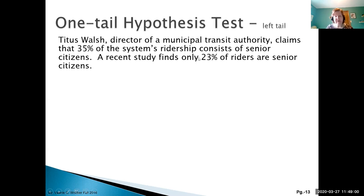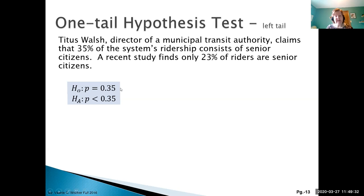Our random variable involves two percentages, so we have proportions. For our null and alternative hypotheses: we're dealing with proportions, so the null is P = 0.35 — the currently accepted value set by the transit authority director, representing the big-brother perspective. The study found 23 percent, which is less than 35, so the alternative hypothesis is P < 0.35. Same population parameter symbol and accepted value, but the alternative reflects what they think is actually happening.